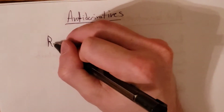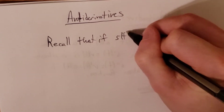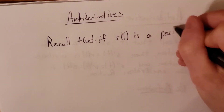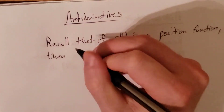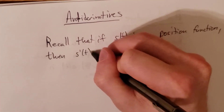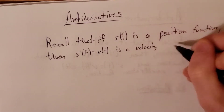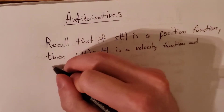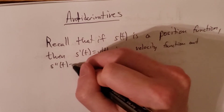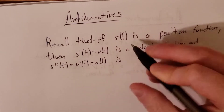The first thing I'd like to start with is to recall that if s of t is a position function, then s prime of t equal to v of t is a velocity function, and s double prime of t, which is v prime of t, which is a of t, is an acceleration function.